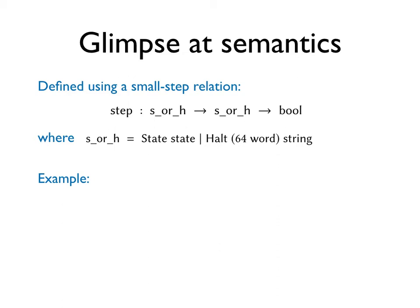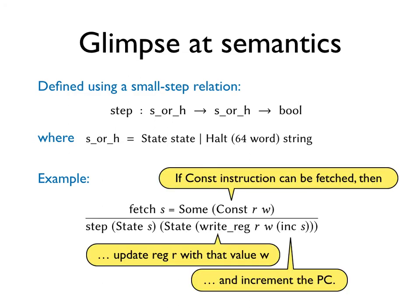We give a semantics to this language using a small step relation. The relation has the following type. And here is an example rule. This rule describes the const function. If a const instruction can be fetched from memory, then assign w to register r and increment the program counter.